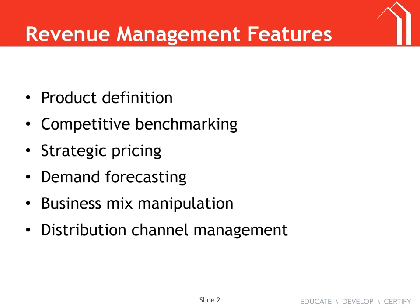Business mix — sometimes a salesperson will go to the revenue manager and say they really want to take a particular group, but the revenue manager says no, because they're looking at a mix of leisure and group business. Taking that group could displace potential leisure travelers. There's a whole chapter on displacement analysis, and we'll also revisit distribution channel management.